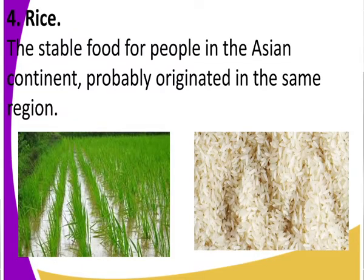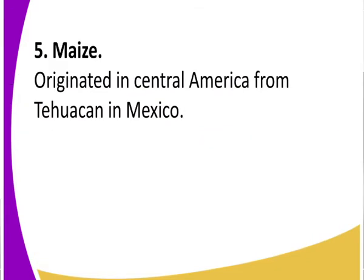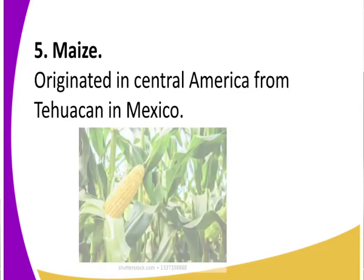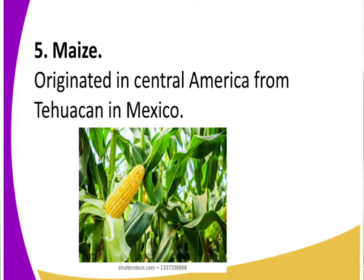That is the final product of rice — it is very common with the Asian people. Let's look at maize, another domesticated crop, which is currently grown across all continents. Maize originated from Central America — specifically from Hucan in Mexico. In Mexico, maize was not for domestic use; it was grown purposely for livestock feeding. You can see that is yellow maize — we have white maize and yellow maize, but in Mexico it was mostly the yellow maize that was grown.